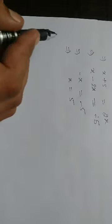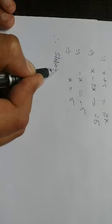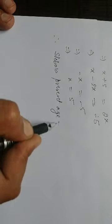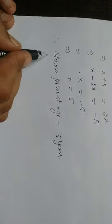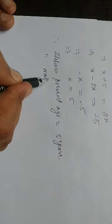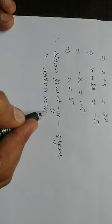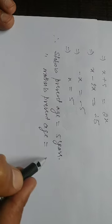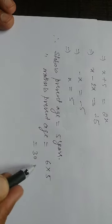Therefore, Shobo's present age is equal to 5 years and Shobo's mother's present age is equal to 6 into 5, which is 30 years.